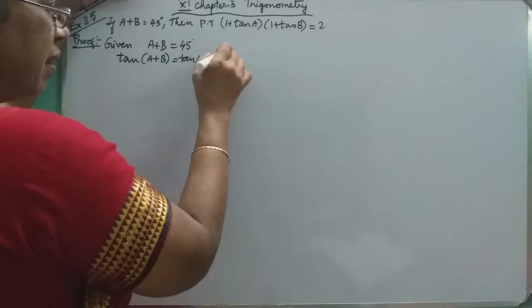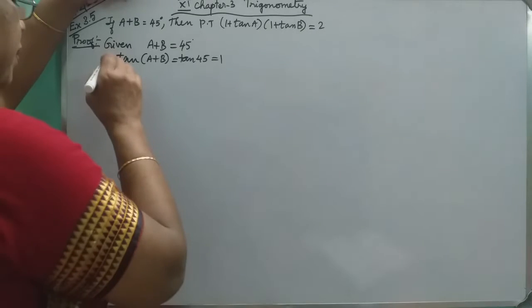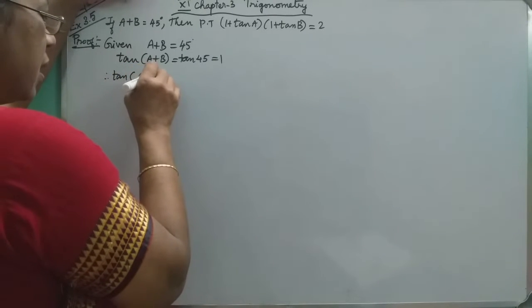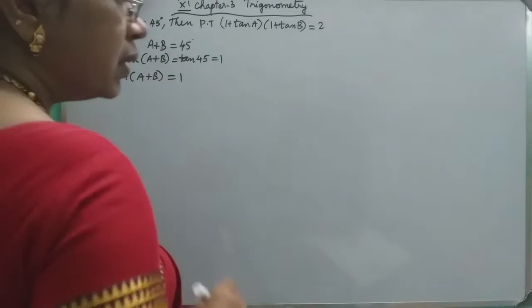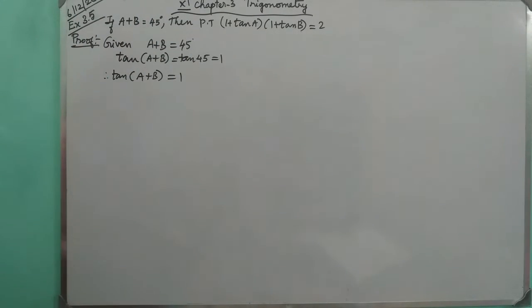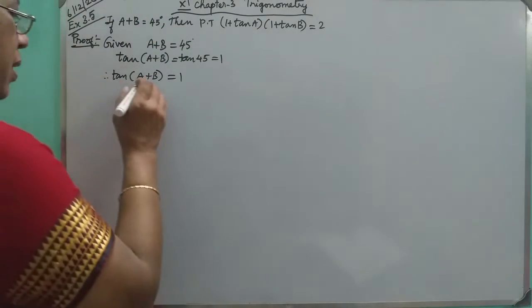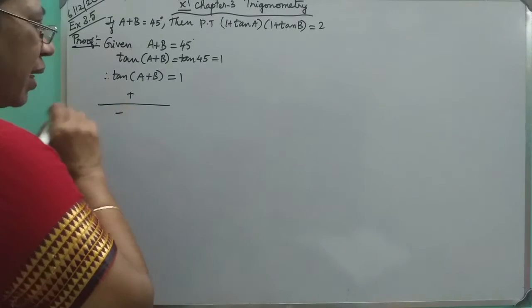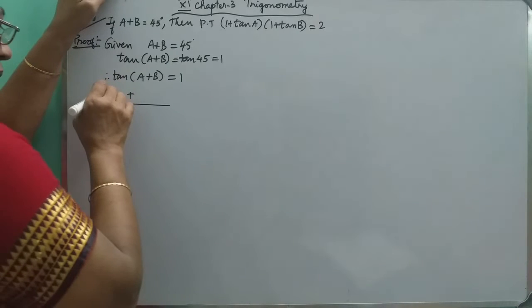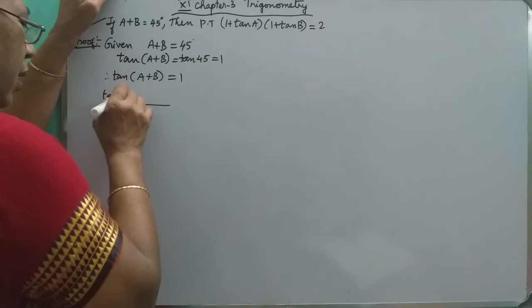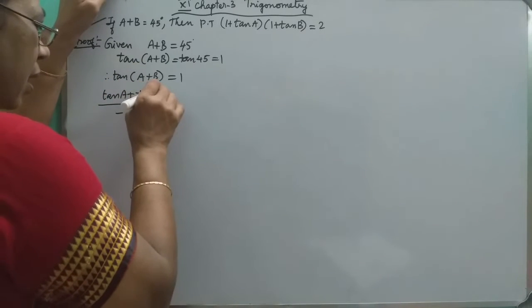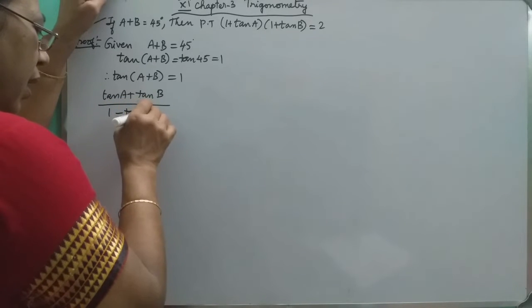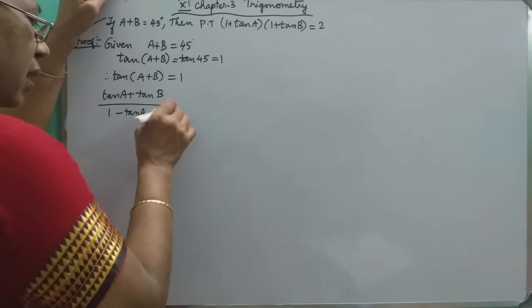How much is tan 45? It is 1. Okay. Therefore, tan of A plus B is equal to 1. Tan of alpha plus beta numerator will be tan A plus tan B divided by 1 minus tan A into tan B. That is equal to 1.